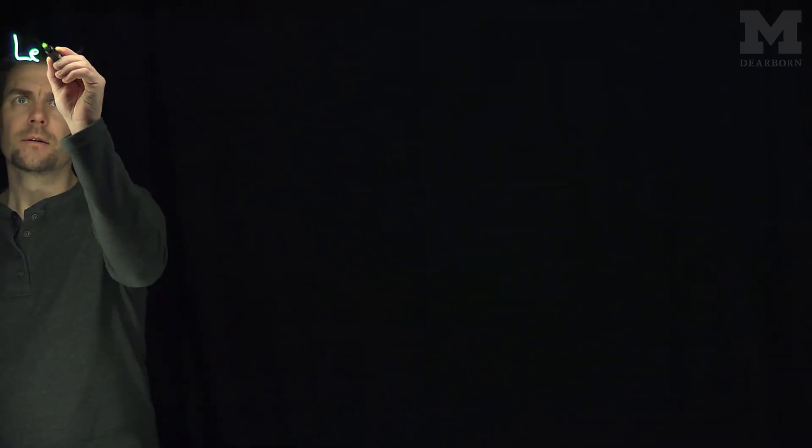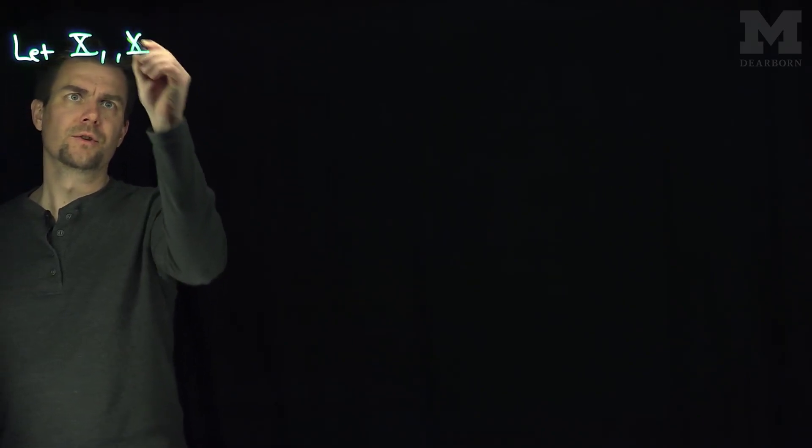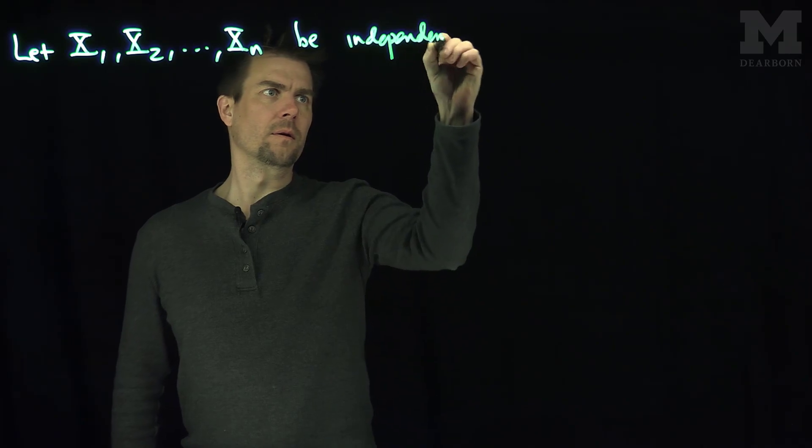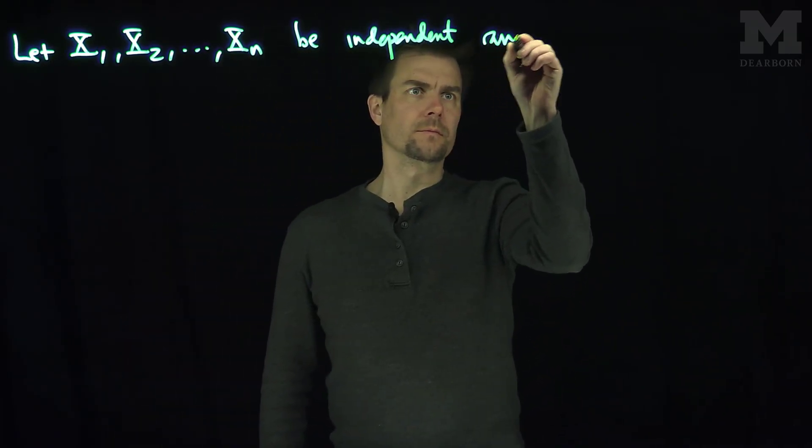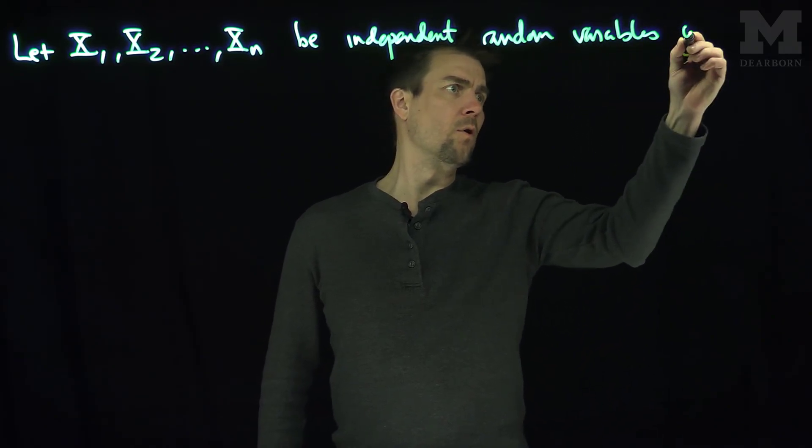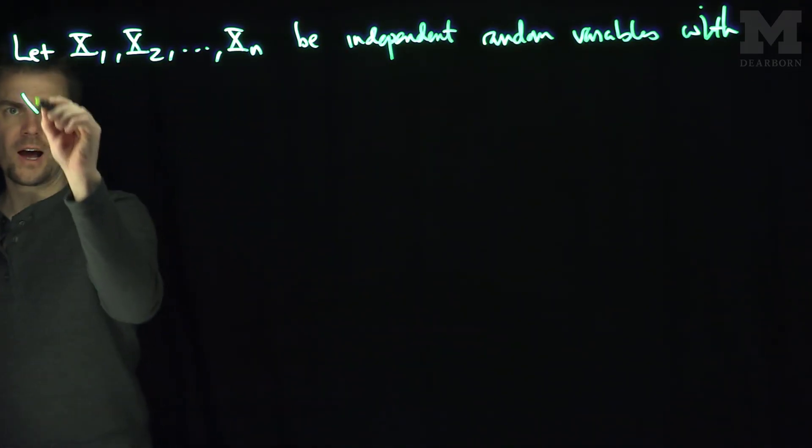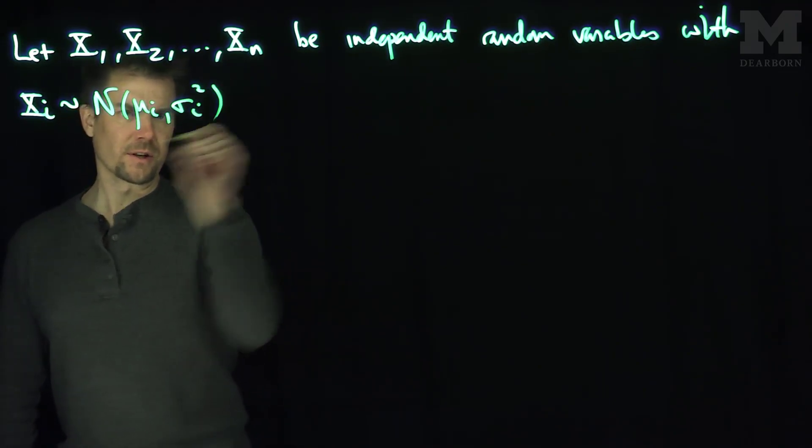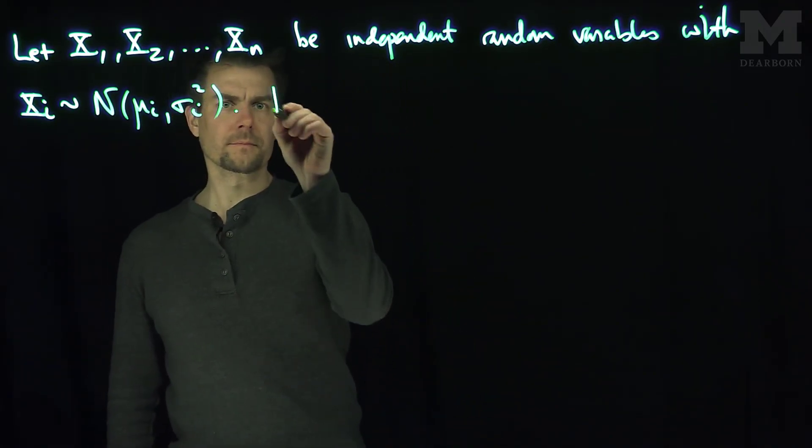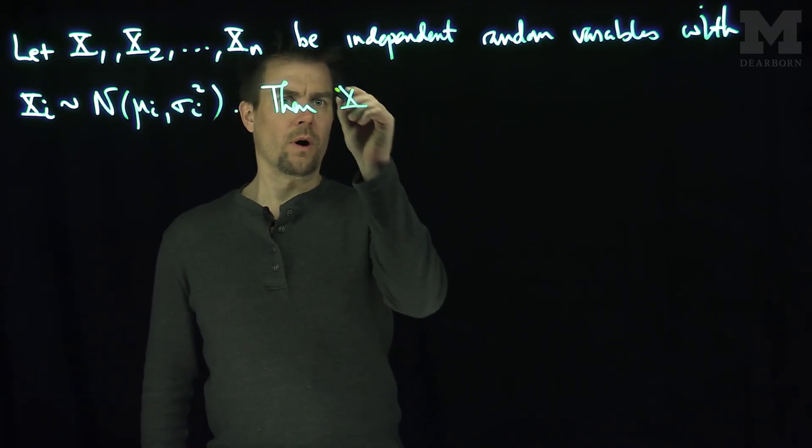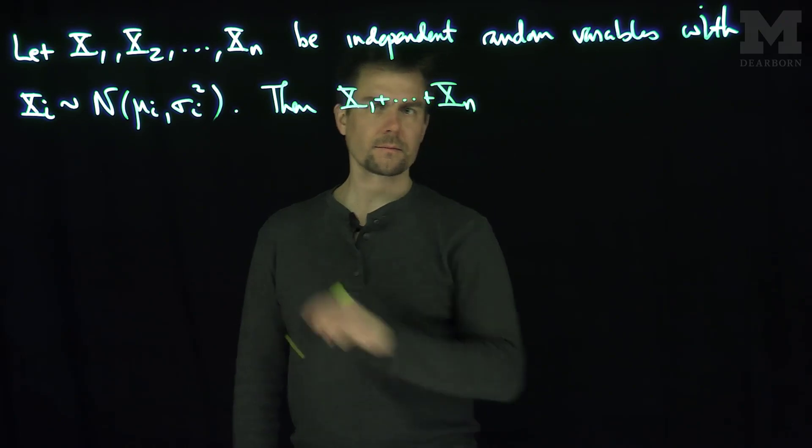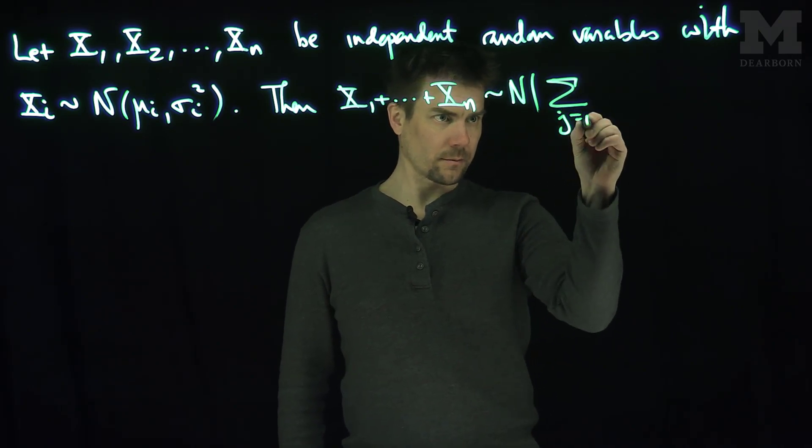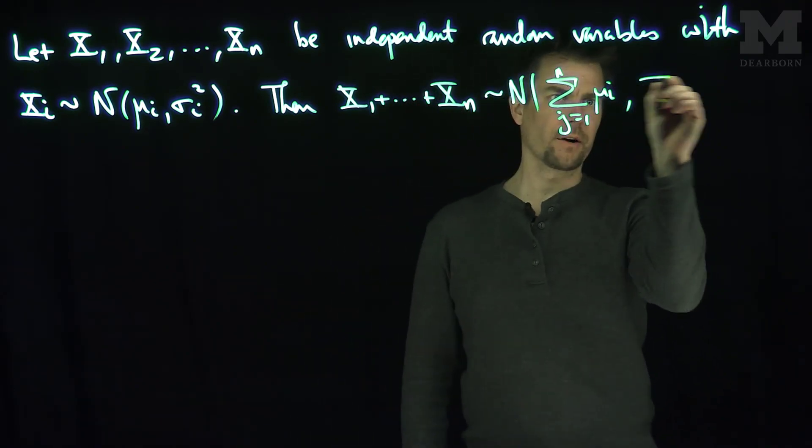Assuming they're independent, let X₁, X₂, through Xₙ be independent random variables with Xᵢ normally distributed with mean μᵢ and variance σᵢ squared. Then I claim that X₁ plus Xₙ is going to be normally distributed with mean the sum of the means and variance the sum of the variances.